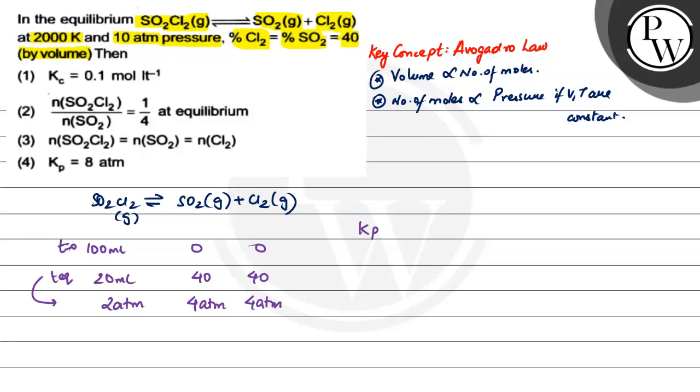So we can find Kp very easily. Kp, what will happen? We have SO2 gas partial pressure into partial pressure of Cl2 gas, divided by partial pressure of SO2Cl2 gas. This is going to be equal to 4 atm into 4 atm by 2 atm, which is going to be nothing but 8 atm. So clearly option 4 here would be the correct option. I hope you have understood.